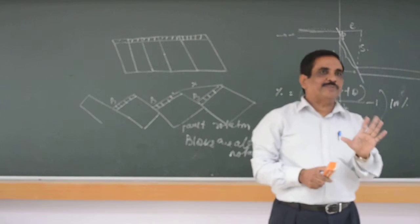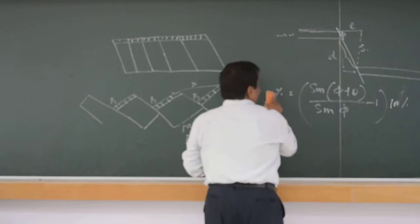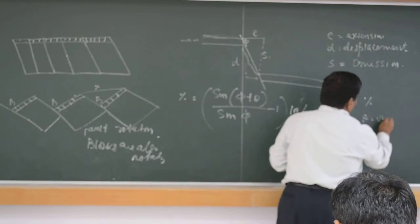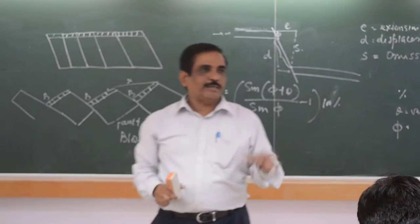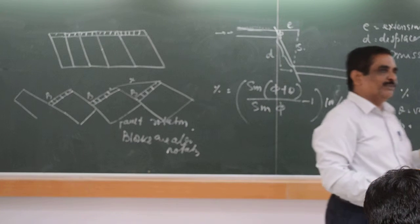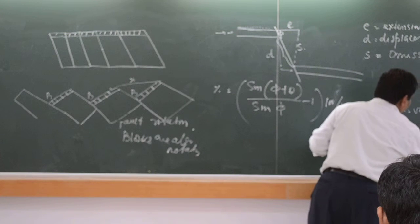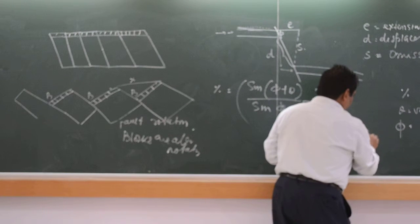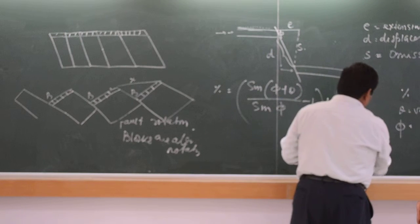Now, I have given an assignment to you also, giving different values of extension and theta values. And I have asked you to calculate this. Remember, you might not have done it, but you have to do it. How much value you have got? 92 out of 3 people have submitted. What is the value you have got? Around 102.33? And the other one — 33.